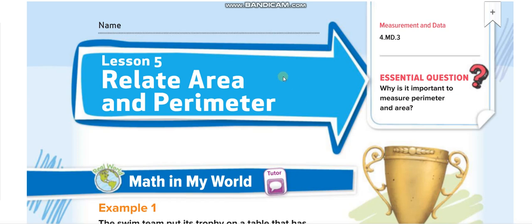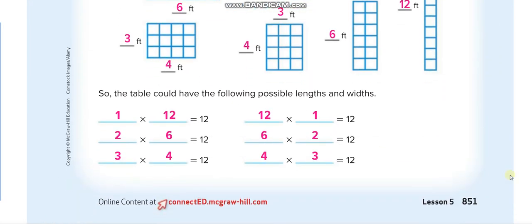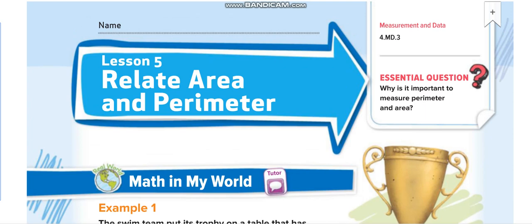Good morning everyone, welcome back to another video lesson. Today's lesson is for Grade 4, Chapter 13, Lesson 5: Relate Area and Perimeter, page number 851. I hope all of you are ready with your books and pencils in your hands to take the lesson.